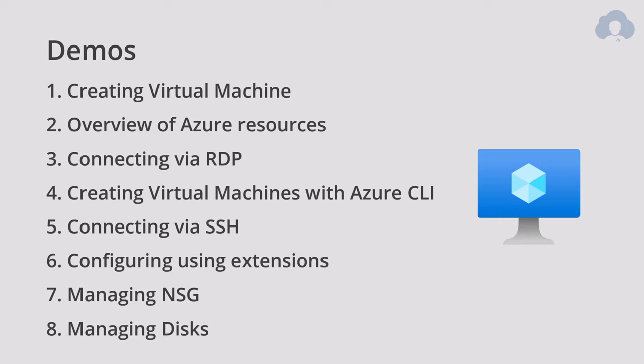Now for the demos. I'll start with creating a virtual machine, then review the Azure resources that were created in the portal, connect through Remote Desktop Services to the Windows virtual machine, create another virtual machine using CLI to show you how fast it is, connect through SSH, configure that virtual machine using extensions, manage the network security group, and also manage disks from the portal. Let's jump to the portal.